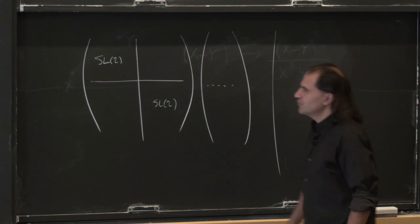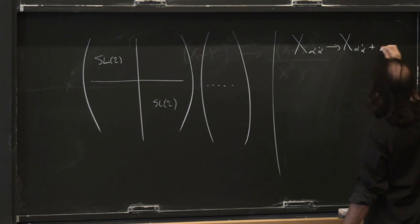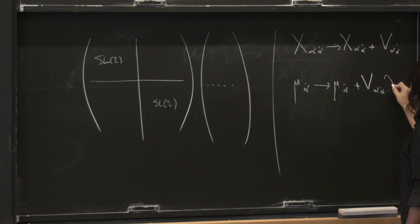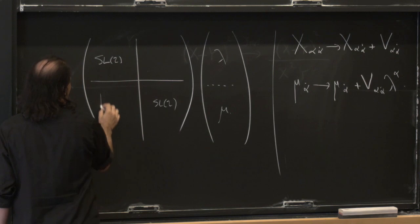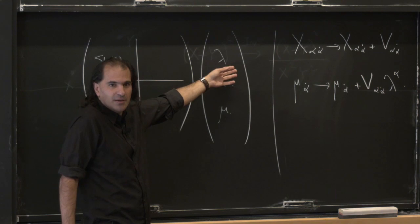Here's an obvious transformation: what are translations? If I translate x goes to x plus some fixed vector v-alpha-alpha-dot, then that just translates mu — mu goes to mu plus v-alpha-alpha-dot times lambda-alpha. So that's beautiful. Translations are also a linear transformation on the space of mu's and lambdas. It's the block that lives down here. So if you give me any old matrix in this block and think of it as a linear transformation acting on this vector, it shifts mu to mu plus something times lambda — so these are the translations.